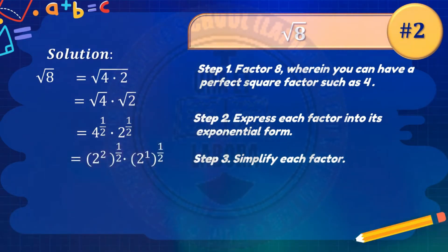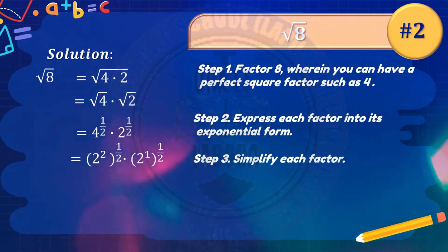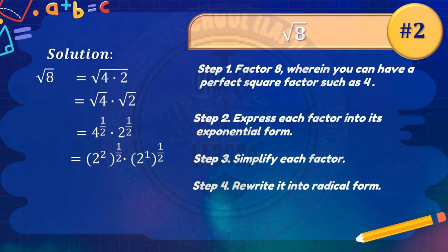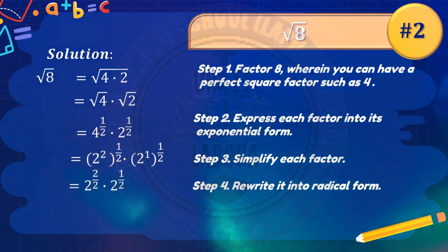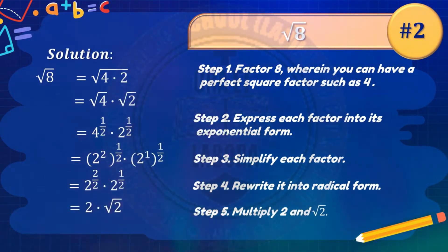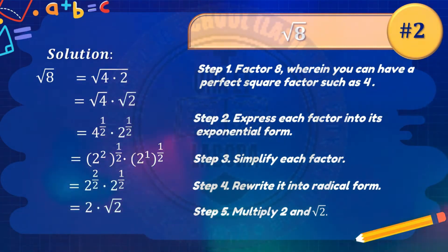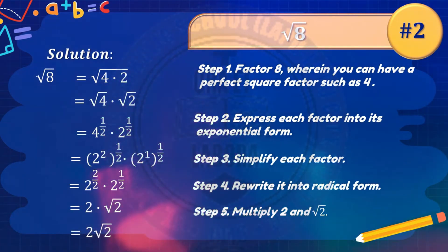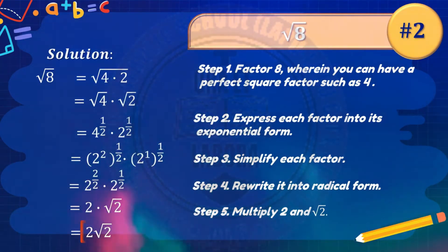Simplify each factor: quantity 2 squared raised to 1 half times 2 raised to 1 half. Rewrite into radical form: 2 raised to 2 over 2 times 2 raised to 1 half. That gives us 2 and square root of 2. Multiply 2 with square root of 2 — that would be 2 square root of 2. So the final answer is 2 square root of 2.